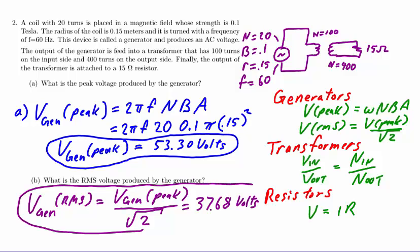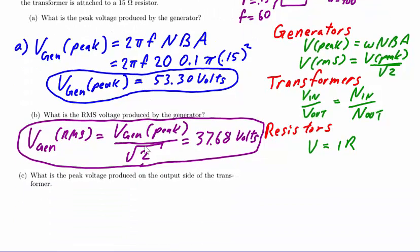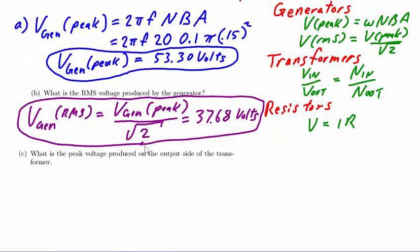Next, we'll need to deal with the transformer. As stated previously, the transformer has an input and an output voltage, and both of these can be expressed in either peak or RMS form. We simply need to use our transformer equation consistently.